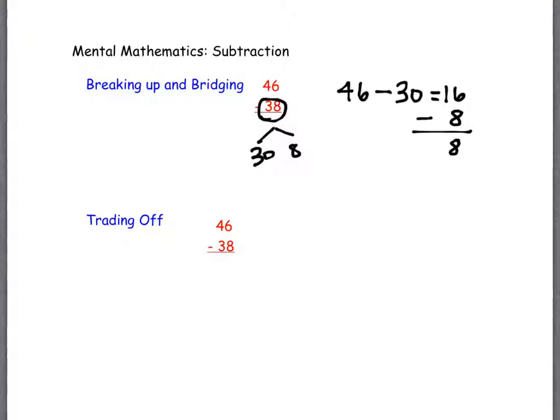There's a trading off method as well, but this is also called equal additions. You've seen this one before. It says again that 38 is not very friendly. It would be much nicer if the number were actually 40. But when I add 2 here, I have to add 2 above. Why does it require me to add 2 here instead of subtract 2? This is a subtraction problem already. So I'm going to add 2 to each value. So this would be 48, and this would be 40. And then I can subtract quite easily to give me the 8.